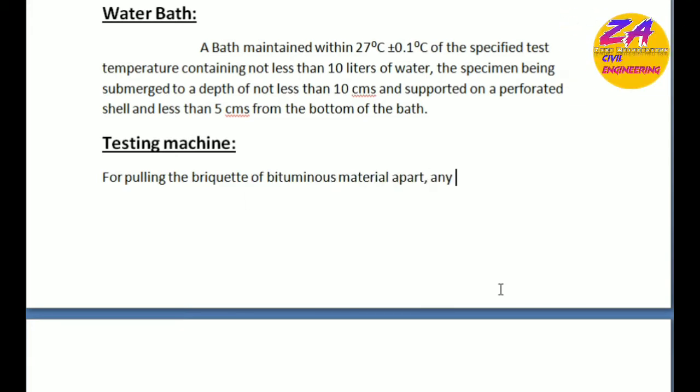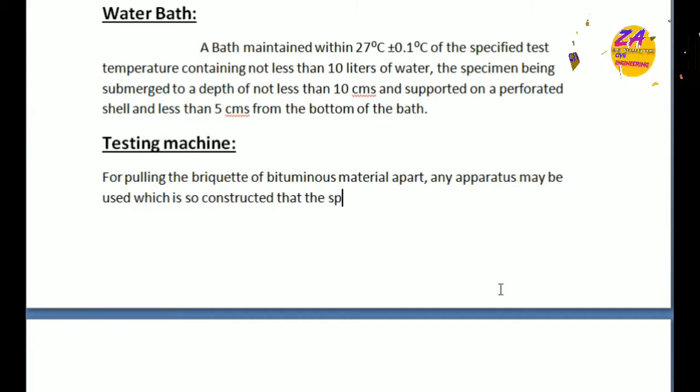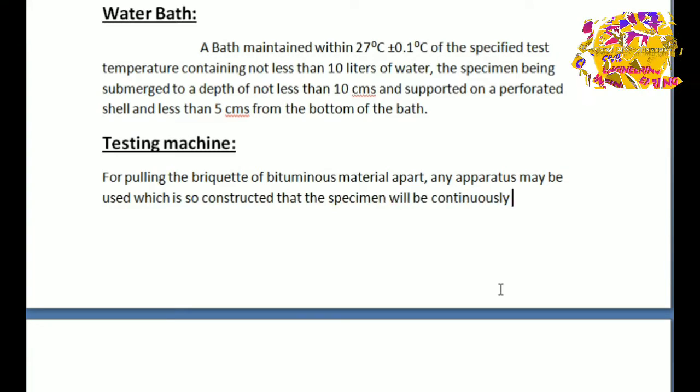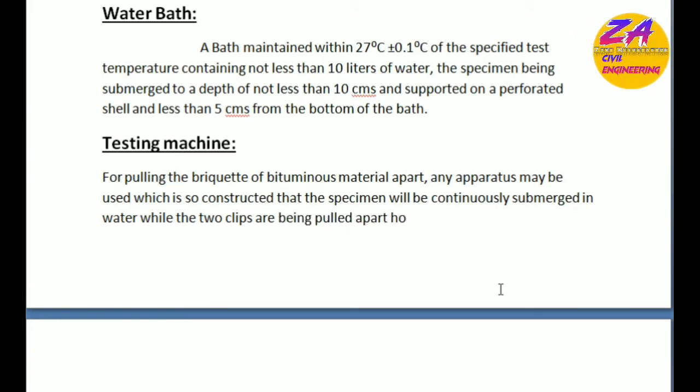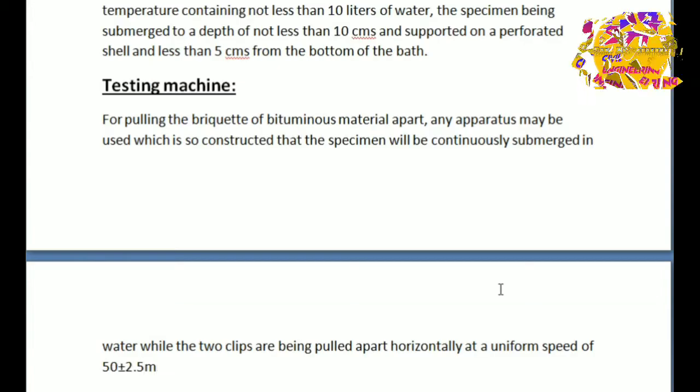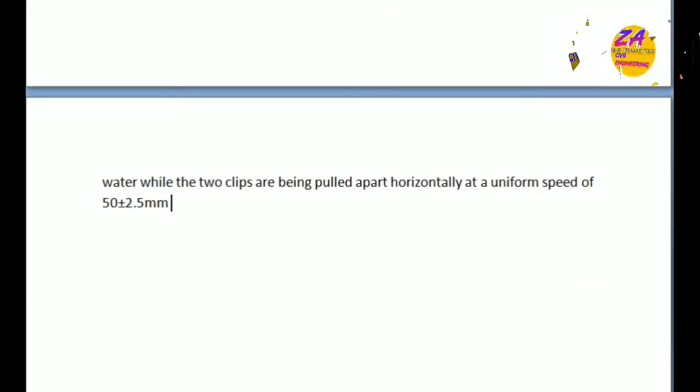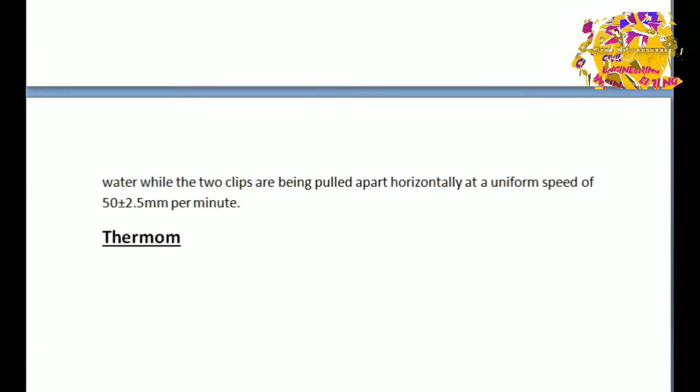Next is the testing machine for pulling the briquette of bituminous material apart. Any apparatus may be used which is constructed so that the specimen will be continuously submerged in water while the two clips are being pulled apart horizontally at a uniform speed. The uniform speed mentioned is 50 ± 0.5 millimeters per minute.